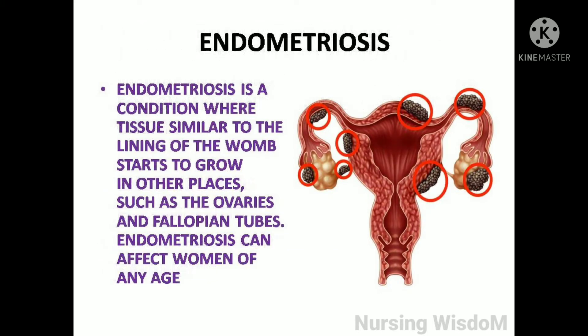Endometriosis is a condition where tissue similar to the lining of the womb starts to grow in other places, such as the ovaries and fallopian tubes. Endometriosis can affect women of any age.